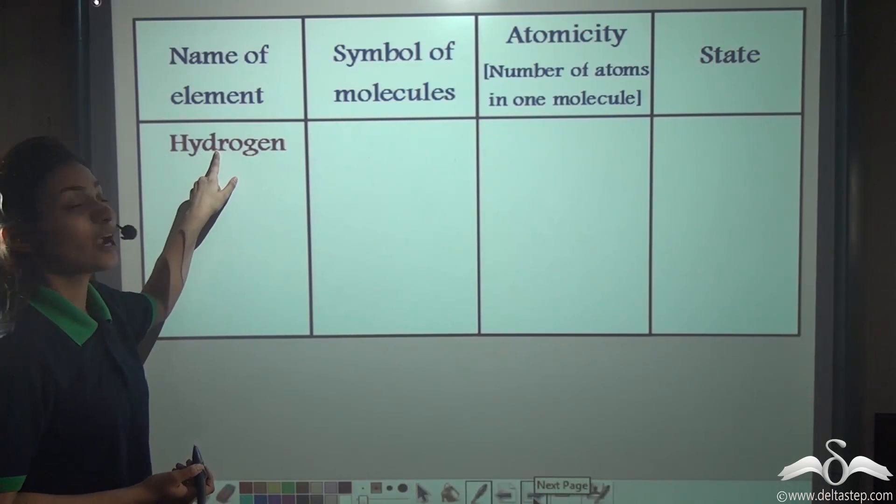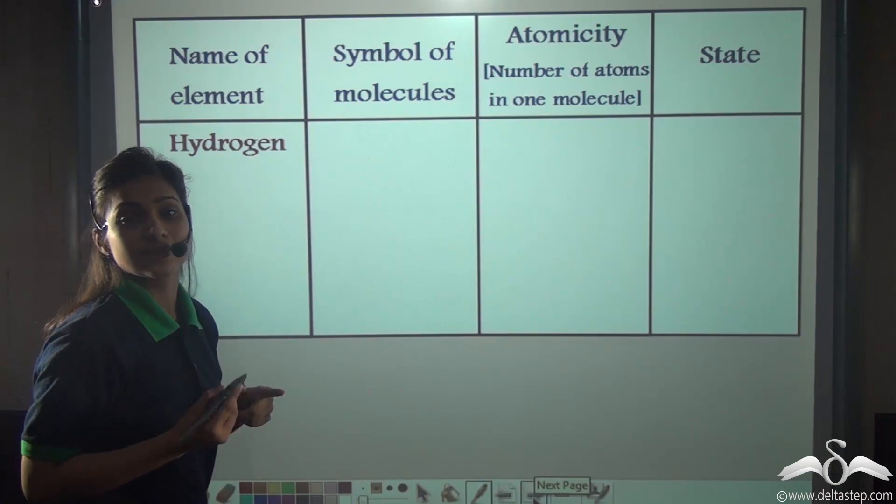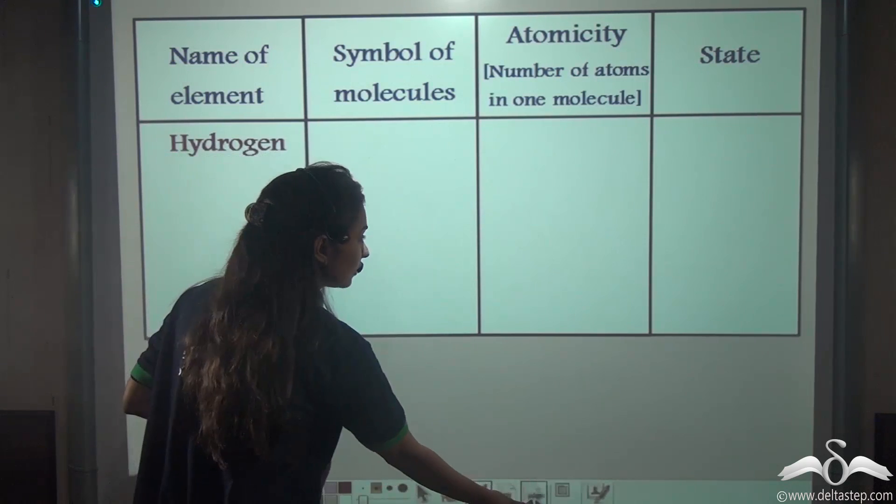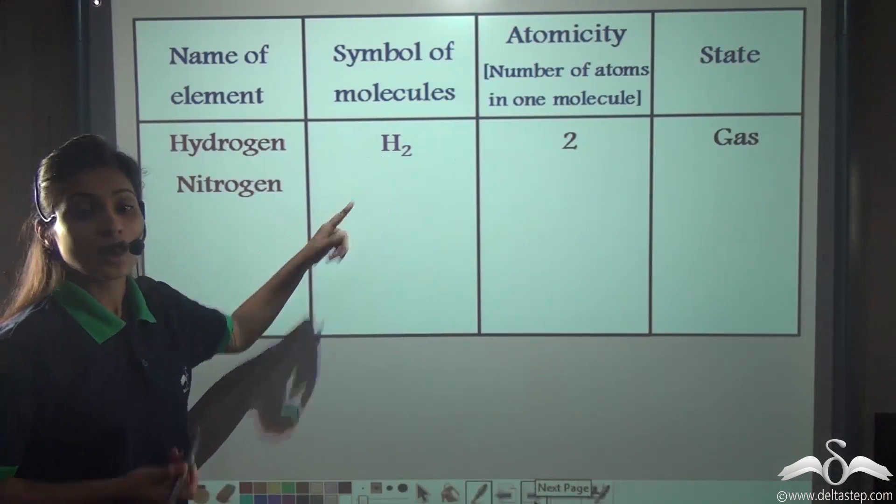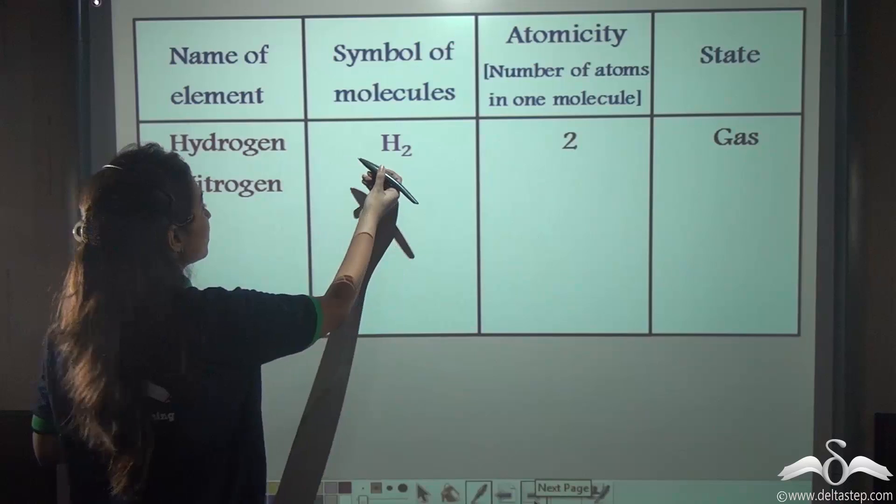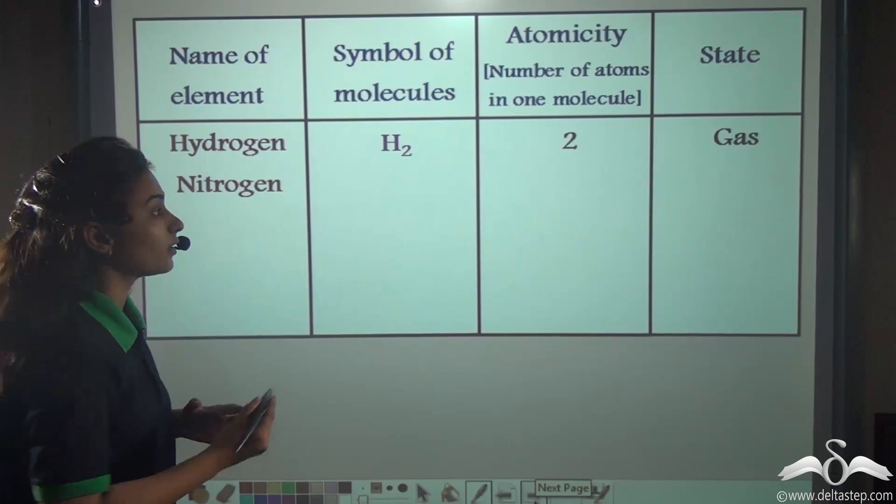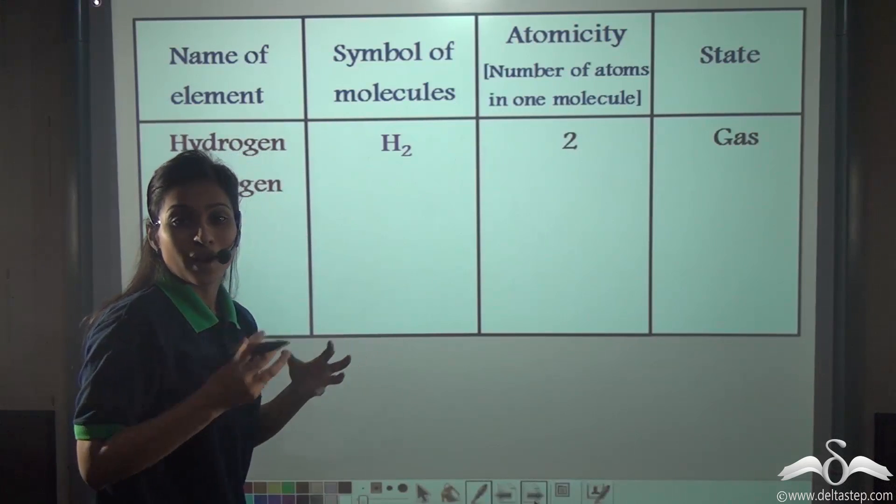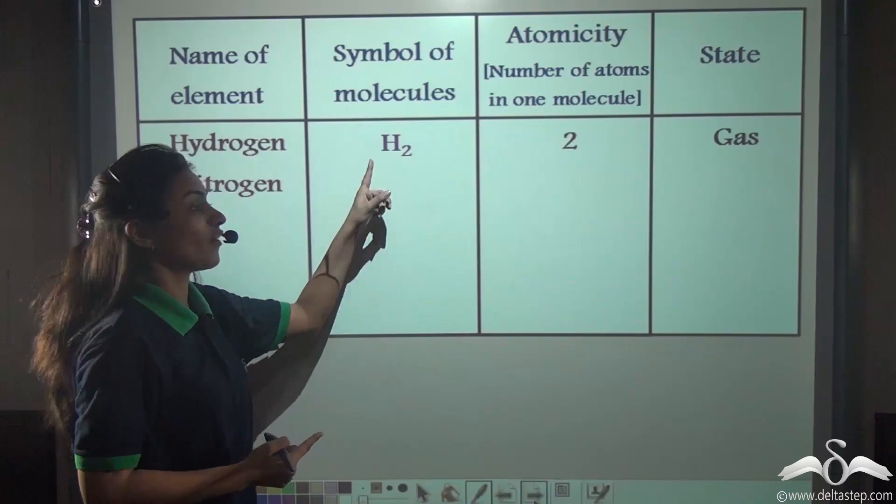Similarly, if you look at Hydrogen. Now Hydrogen has the symbol as H, but it is represented as H2 because the atomicity of hydrogen is 2. Now what do I mean by atomicity here? It means that two atoms of hydrogen combine to form one molecule of hydrogen.